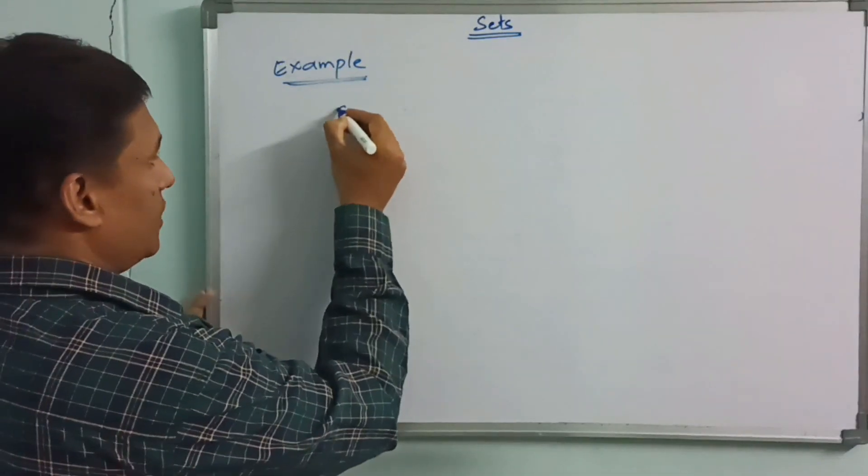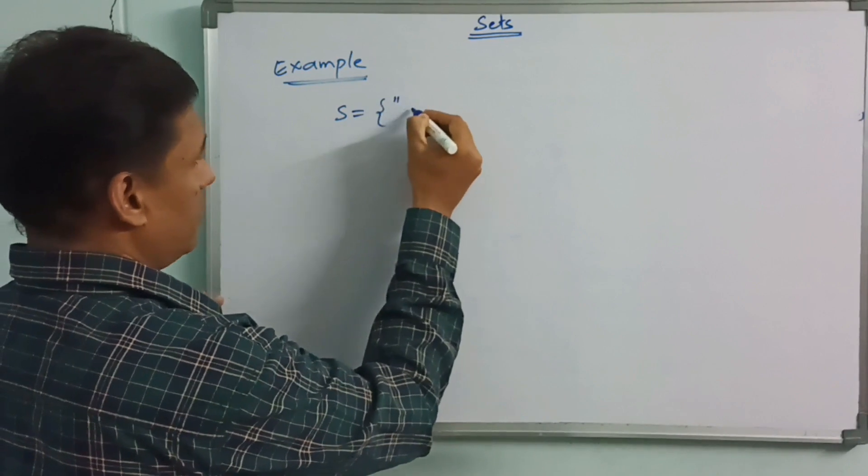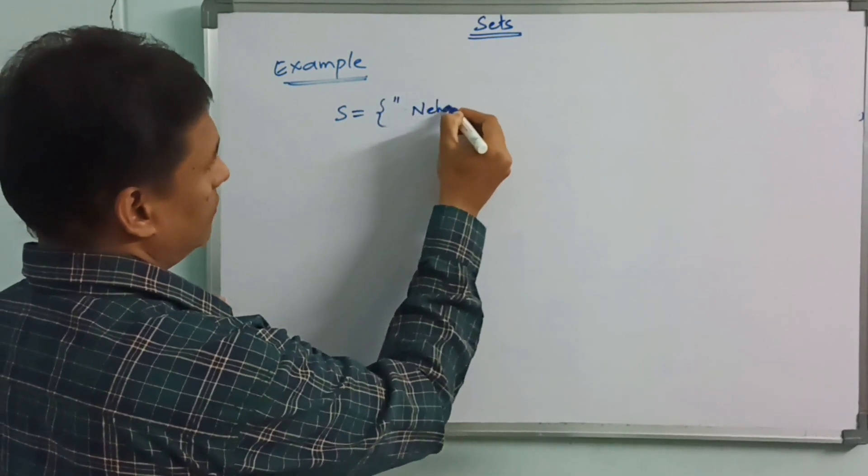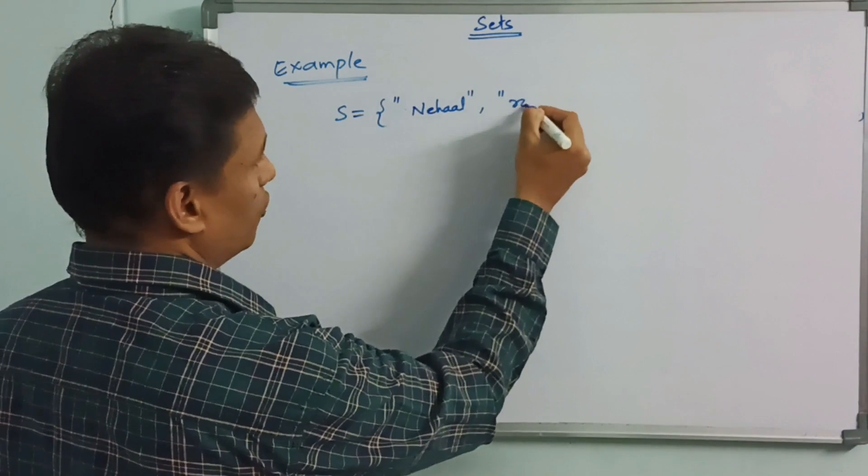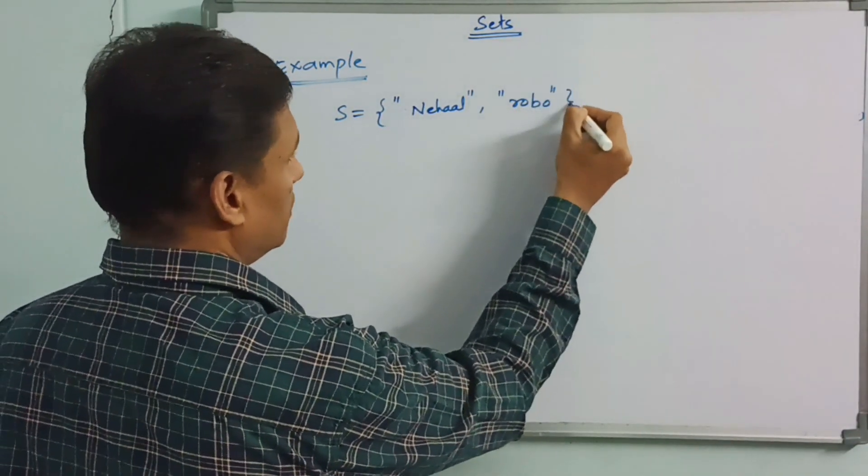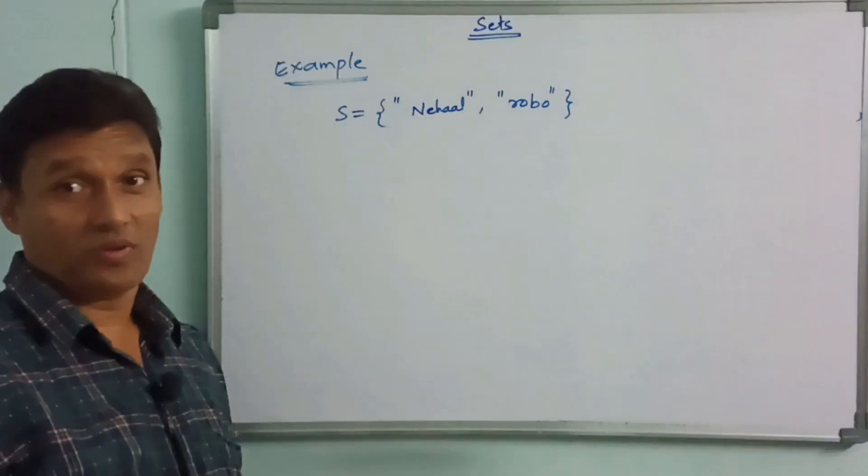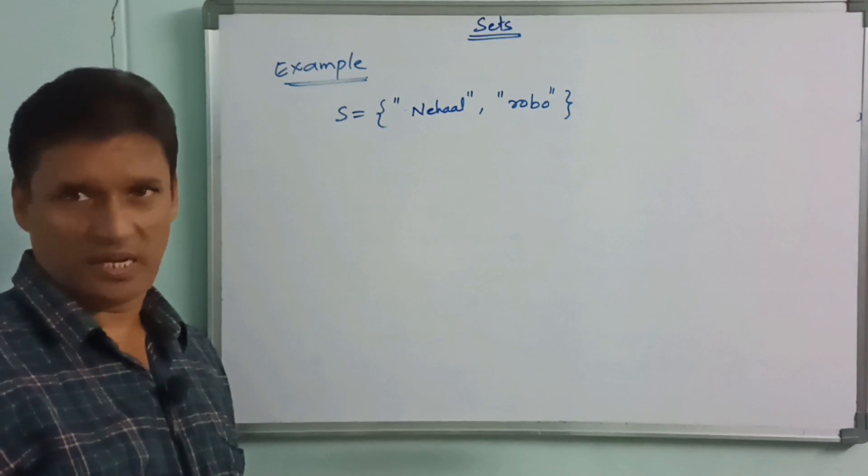For example, curly braces, nehal, comma, robo, these two elements enter. One element display should choose.